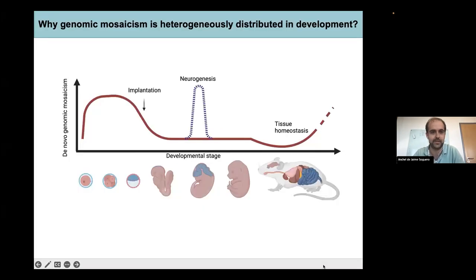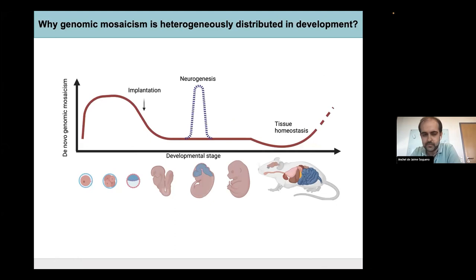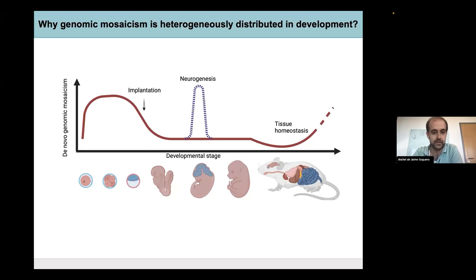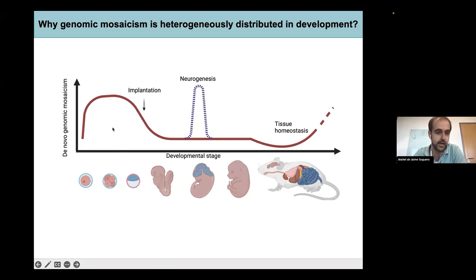Sorry for the interruption. So genomic stability is critical for proper embryonic development. However, the rates of de novo genomic mosaicism — that is, for example, mutations, copy number variations, or gains or loss of chromosomes, that is aneuploidy — are not equally distributed neither across lineages nor across stages of mammalian development. For instance, we have a huge wave of aneuploidy or chromosomal mosaicism in pre- and post-implantation early stages of embryo development.